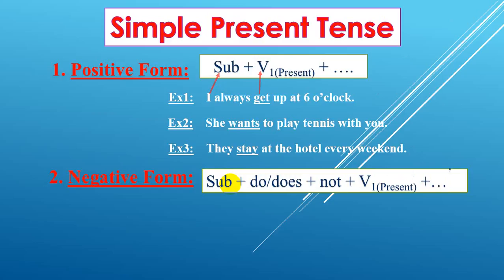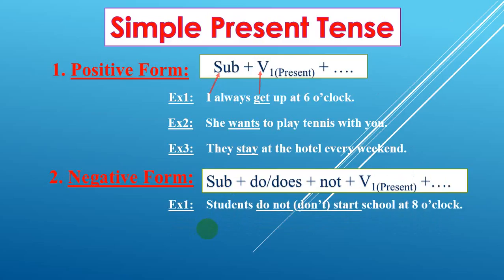Okay, so let's see example number one. Students do not — or don't — start school at eight o'clock. 'Do not' here is to show the negative form. You can make it the short form: do not becomes don't. It depends on the subject — here 'students' is plural, so that's why we use 'do'. Students do not, or don't, start school at eight o'clock.